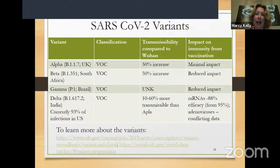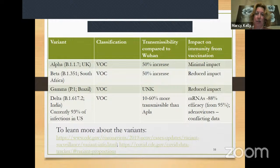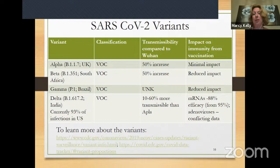Delta definitely has a reduced impact with respect to vaccination. From what I'm reading, the efficacy for the mRNA vaccines — Pfizer and Moderna — is down to 88%. For the adenovirus vaccine, Johnson and Johnson, there is conflicting data. But again, there are limited studies because the Delta variant is relatively new, so these numbers can change.